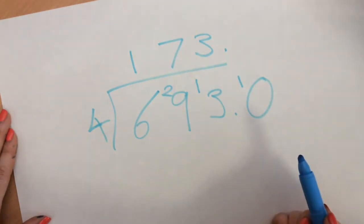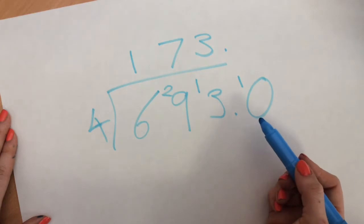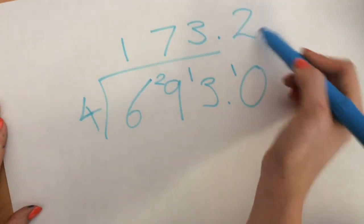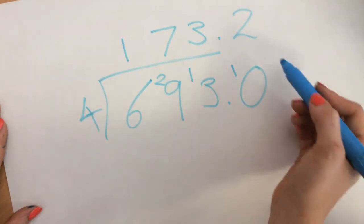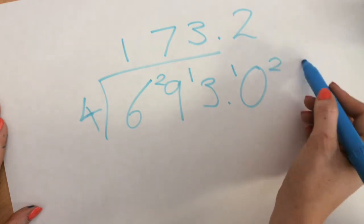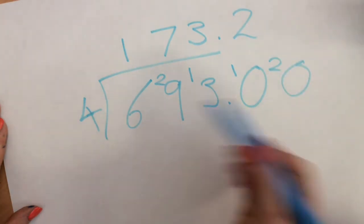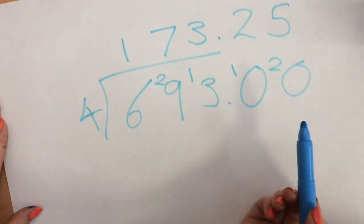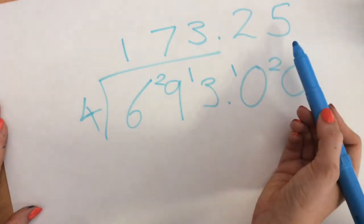And the same again, the two gets exchanged over giving me 20, and I can get five lots of four out of 20. 173.25.